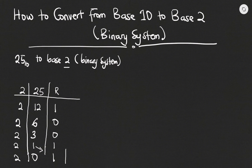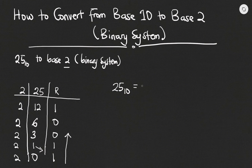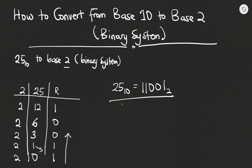We write our answer from bottom to top. Therefore 25 base 10 converted to binary, or base 2, is equal to 11001 base 2. So that is my answer for converting 25 base 10 to base 2.